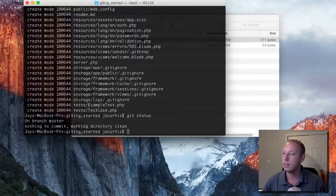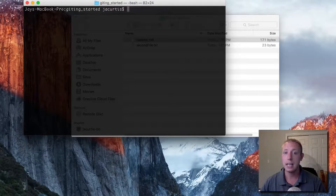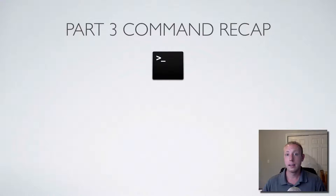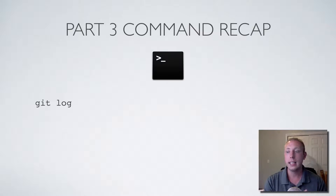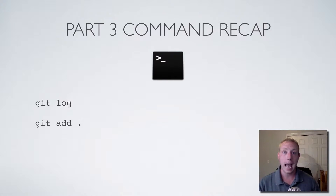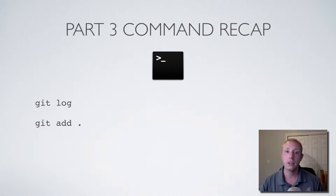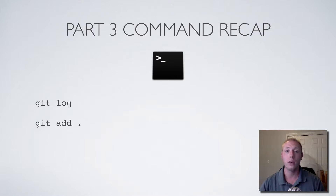Now we commit with a standard initial commit message — something like 'initial commit' — and it adds all those files to our directory. Running git status again shows nothing new. So to recap: we learned git log, which shows a history of all previous commits. We also learned git add period, which adds everything in the directory that's not being tracked. In the next video we're going to learn about a special file called .gitignore and how it helps you protect certain files from being stored in your repository that you don't want tracked.